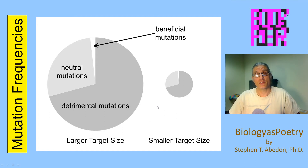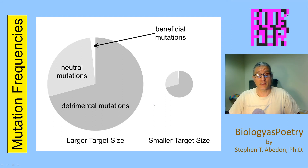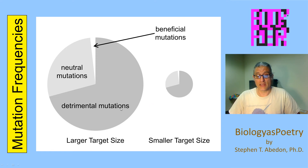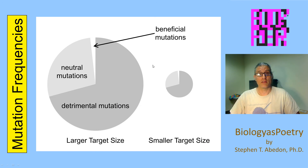We can also consider the target size for mutation. The more genes that are involved in a process, the more nucleotides that make up the genes involved in a process, the greater the likelihood that mutation will occur within that process — and in all likelihood those mutations will be detrimental, but occasionally they're beneficial.